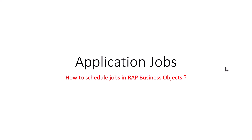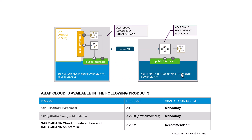I want to talk about how you can schedule jobs in RESTful ABAP programming model business objects. Starting from SAP S4 HANA 2022, even in the private edition and also on-premise, it is recommended to use the ABAP cloud development model.